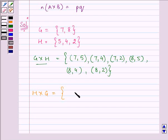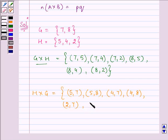So it will be (5,7), (5,8), (4,7), (4,8), (2,7), (2,8).